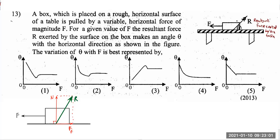There's another force we shouldn't forget: the weight of the object. I'll use another color — black — for the weight. Weight is a fixed force, so this is Mg. We know that N is equal to Mg. R is the resultant of N and FF. These are not three different forces — R is simply the resultant of the normal reaction and friction. Keep that in mind.